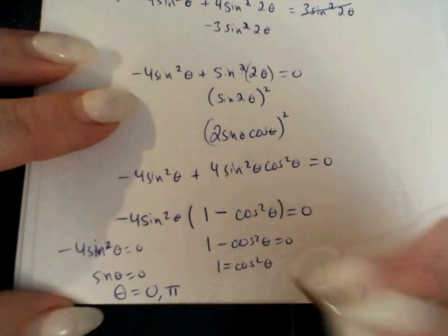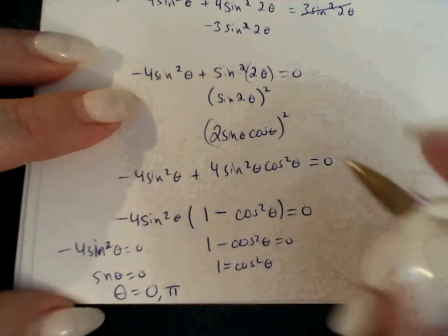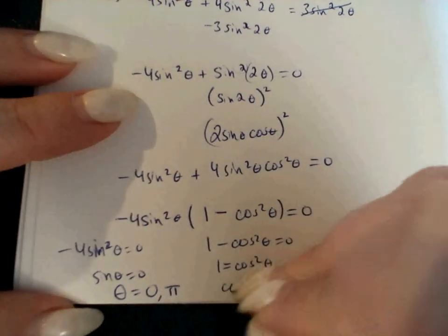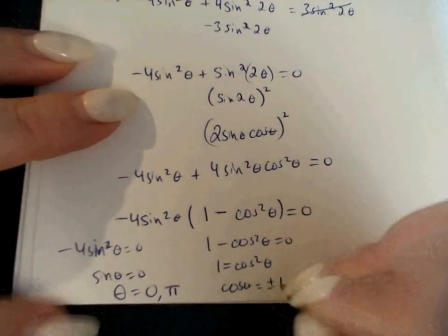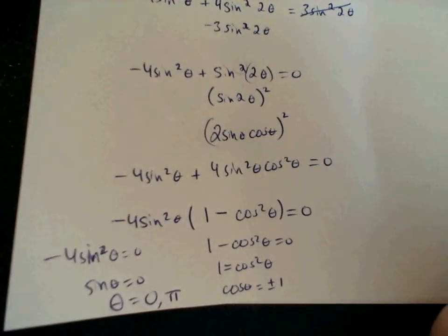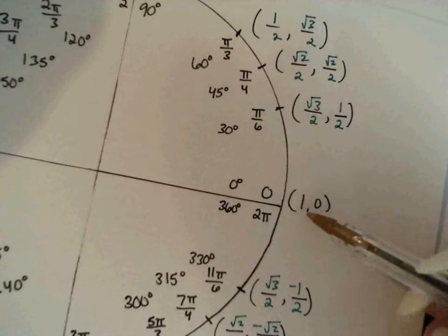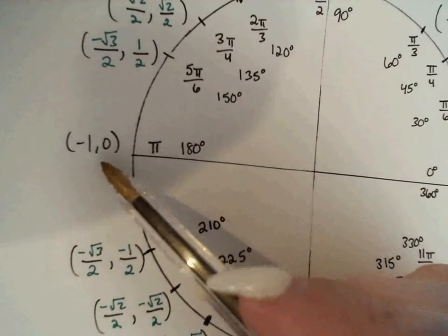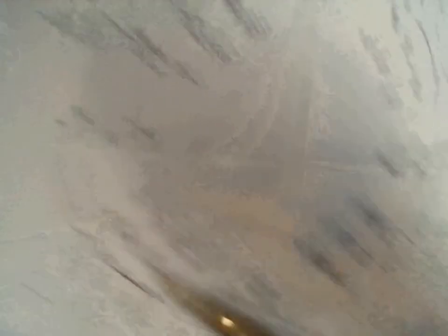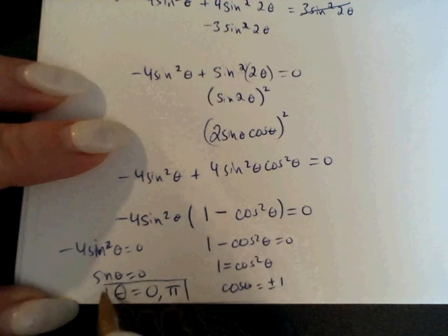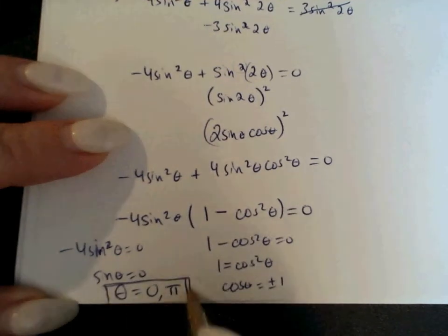For the other factor, I set 1 minus cosine squared equal to 0, add cosine squared over, and take the square root — giving two answers: cosine theta equals positive and negative 1. Cosine equals 1 at 0 and negative 1 at π, which are already the answers we have. So the final answers are just theta equals 0 and π.